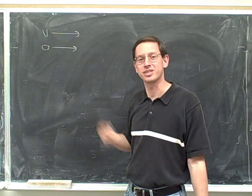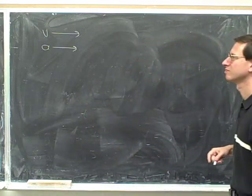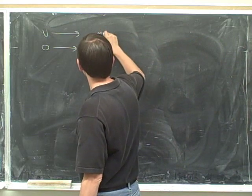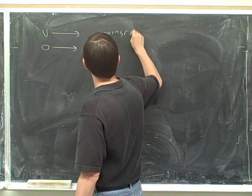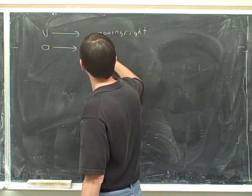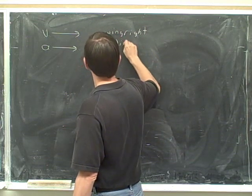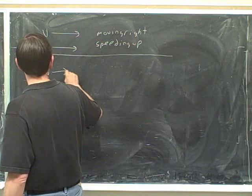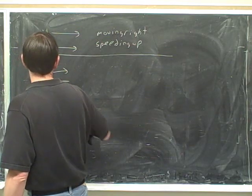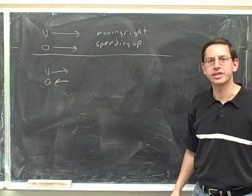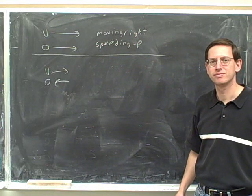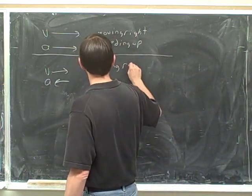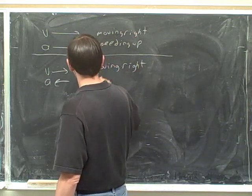Write down everything you can about this object. I hope you gave it a shot. We know this object is moving right and speeding up. Write down what you can about this object. It's moving right and slowing down.